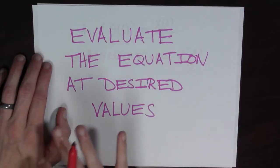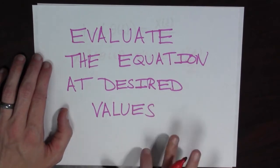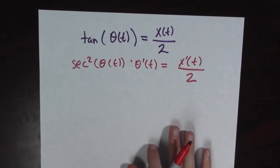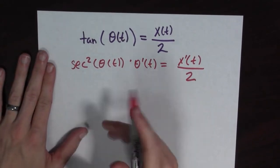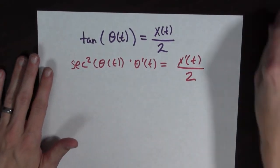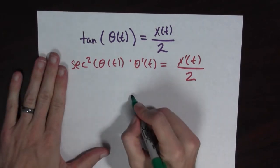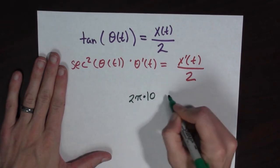And now that we've differentiated our equation, we must evaluate the equation at desired values. So let's look at our equation. The easy one to set up would be θ'(t). So let's look at what θ'(t) is. It is 2π times 10.